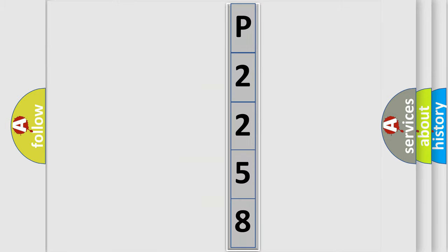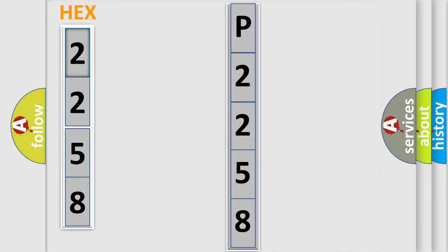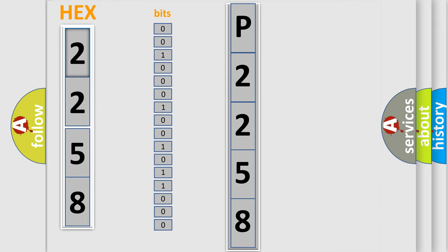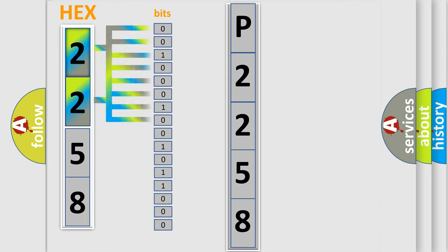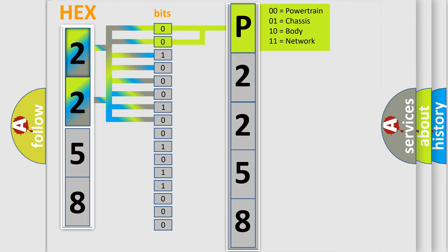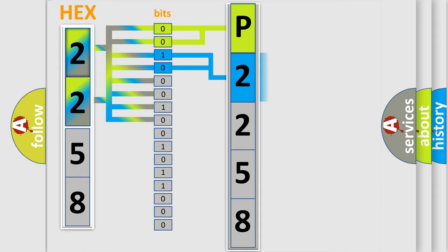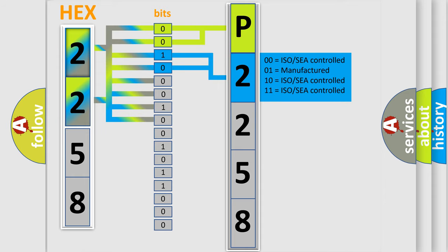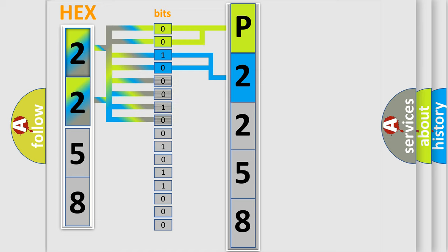The error code is split into two bytes consisting of 16 bits. One bit is the basic unit that each computer works with. The bit has two logical states: zero, low level, and one, high level. By combining the first two bits, the basic character of the error code is expressed. The next two bits determine the second character. The last bits of the first byte define the third character of the code.